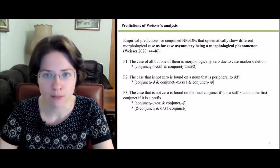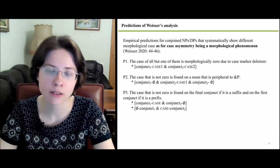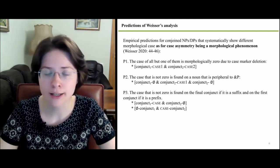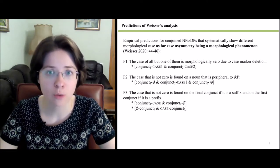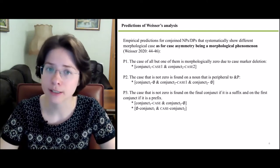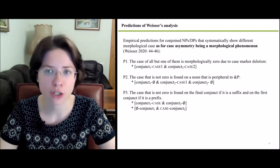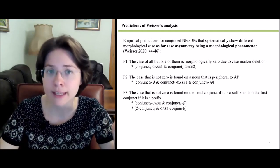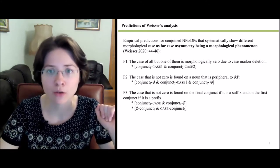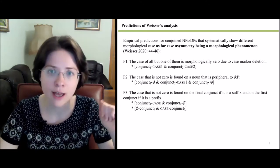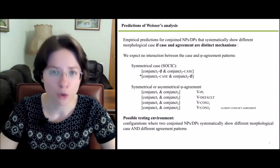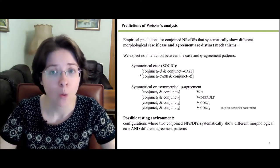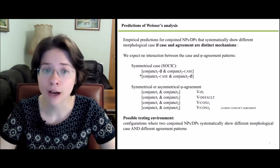The deleted case markers can also trigger stem allomorphy, and suspended affixation is degraded when affixes are phonologically different. Weiser's analysis makes several empirical predictions for conjoined pieces that systematically show different morphological case. First, the case of all conjuncts but one is expected to be morphologically zero due to case marker deletion. Second, the non-zero case should be found on a noun that is peripheral to the conjunction. Finally, the non-zero case is expected on the final conjunct if it is a suffix and on the first conjunct if it is a prefix. Moreover, if case and agreement are distinct mechanisms, we expect no interaction between case and phi agreement patterns.